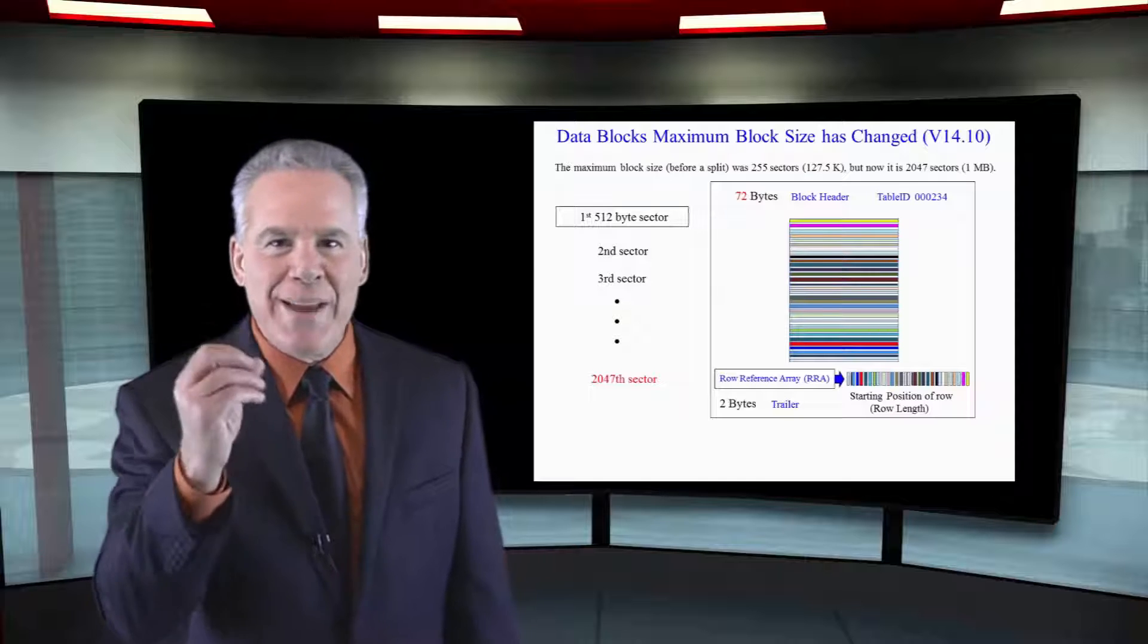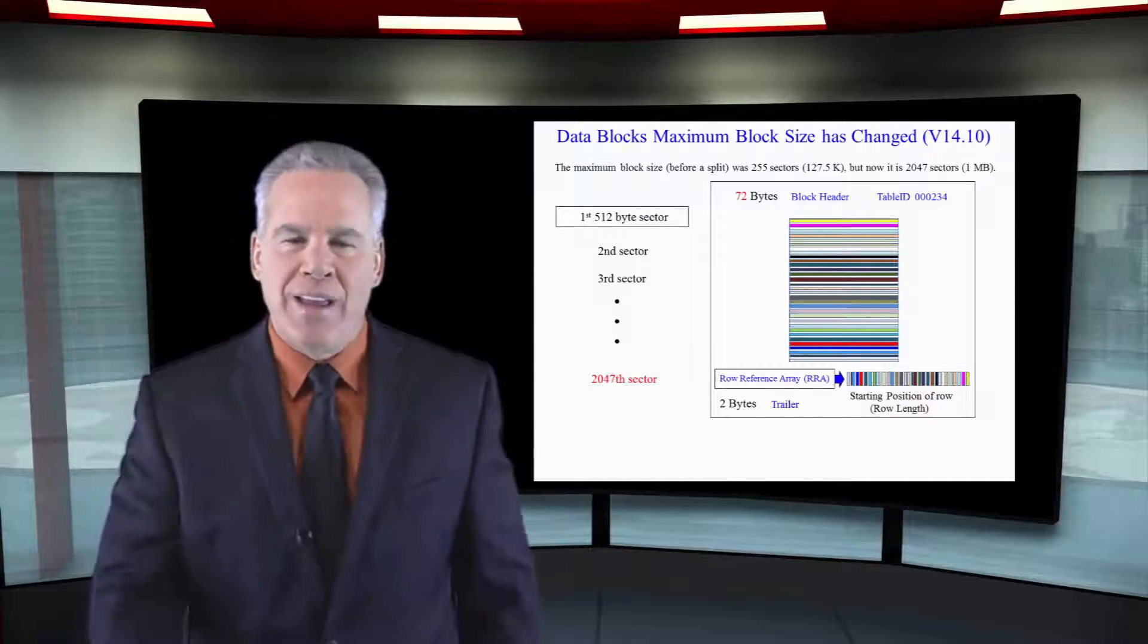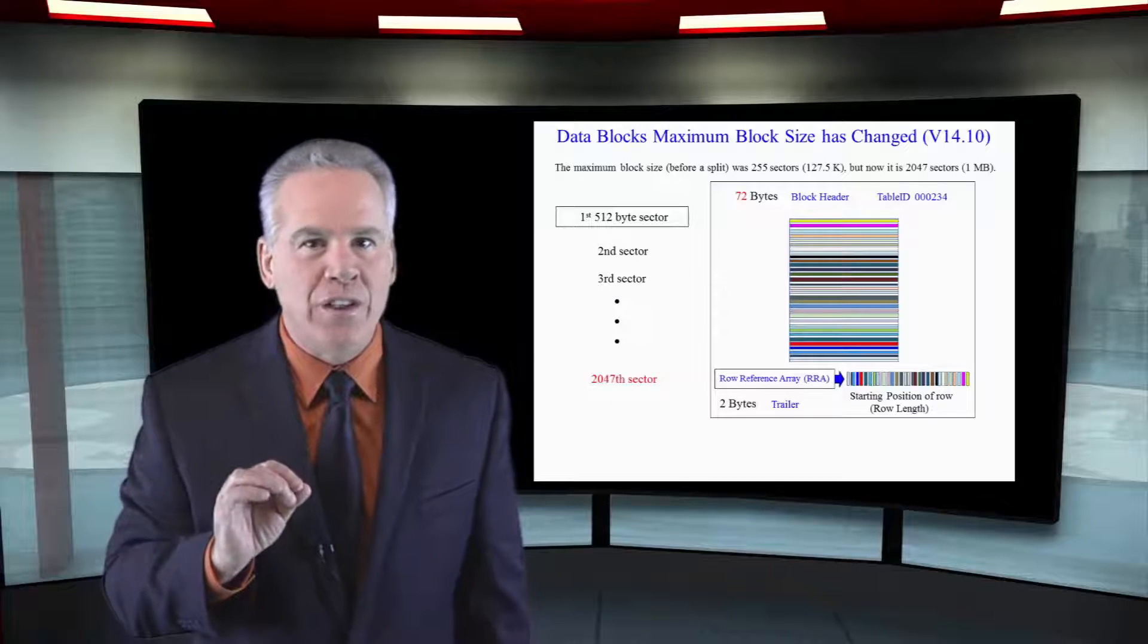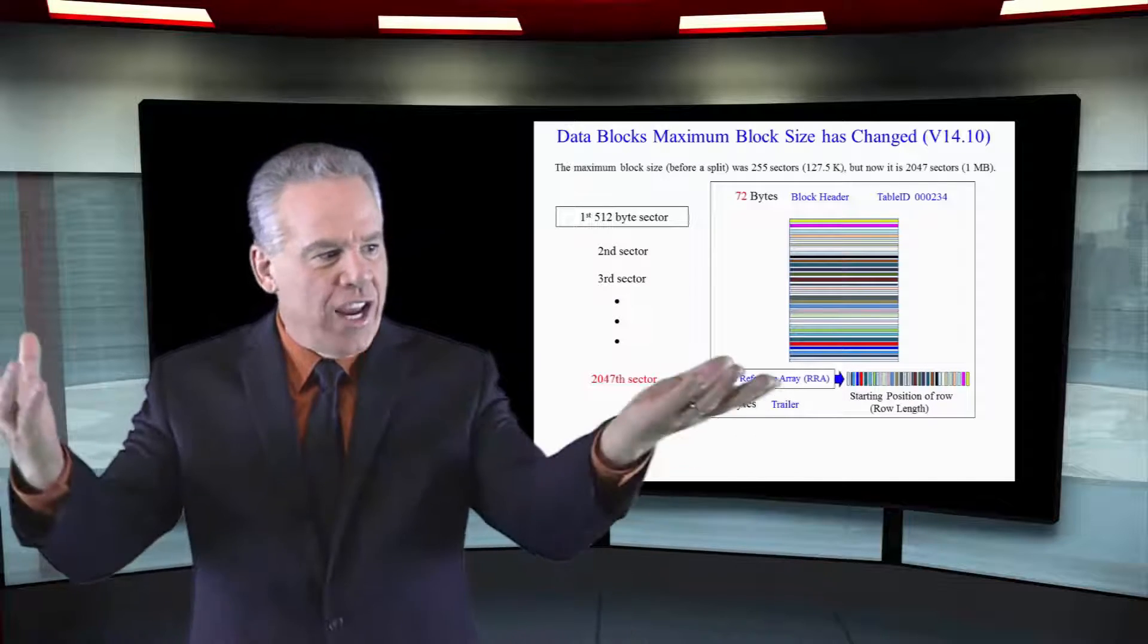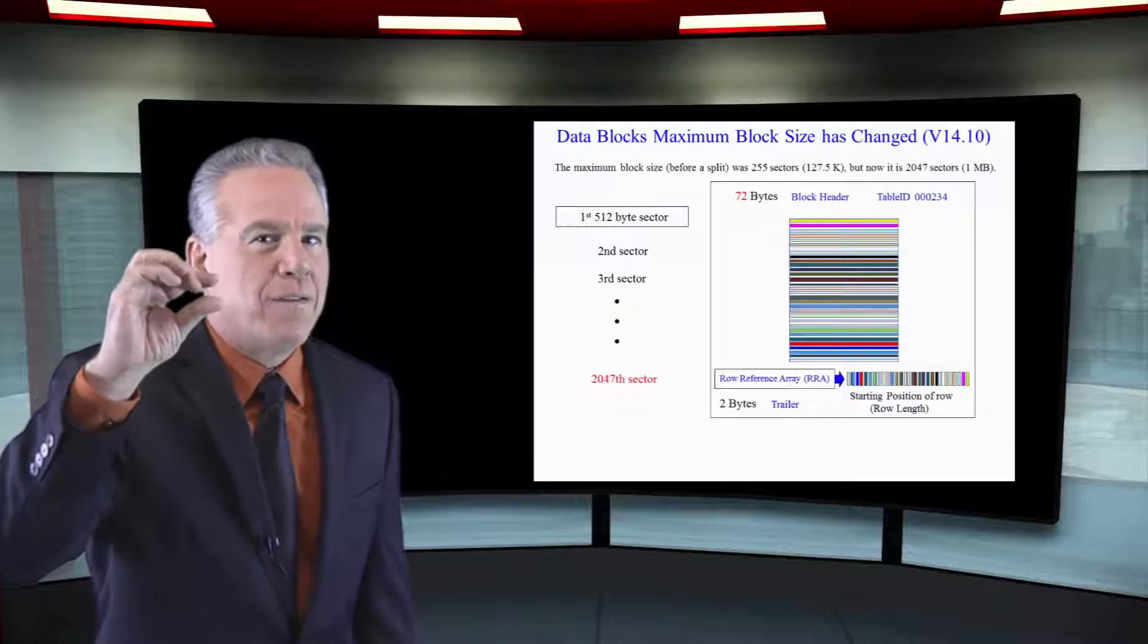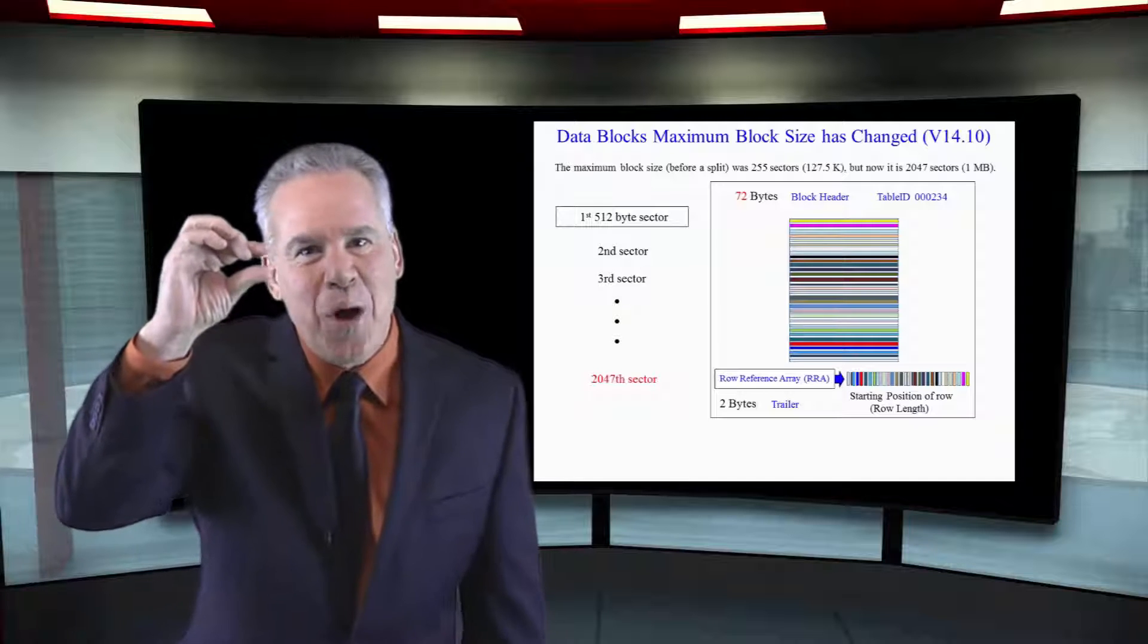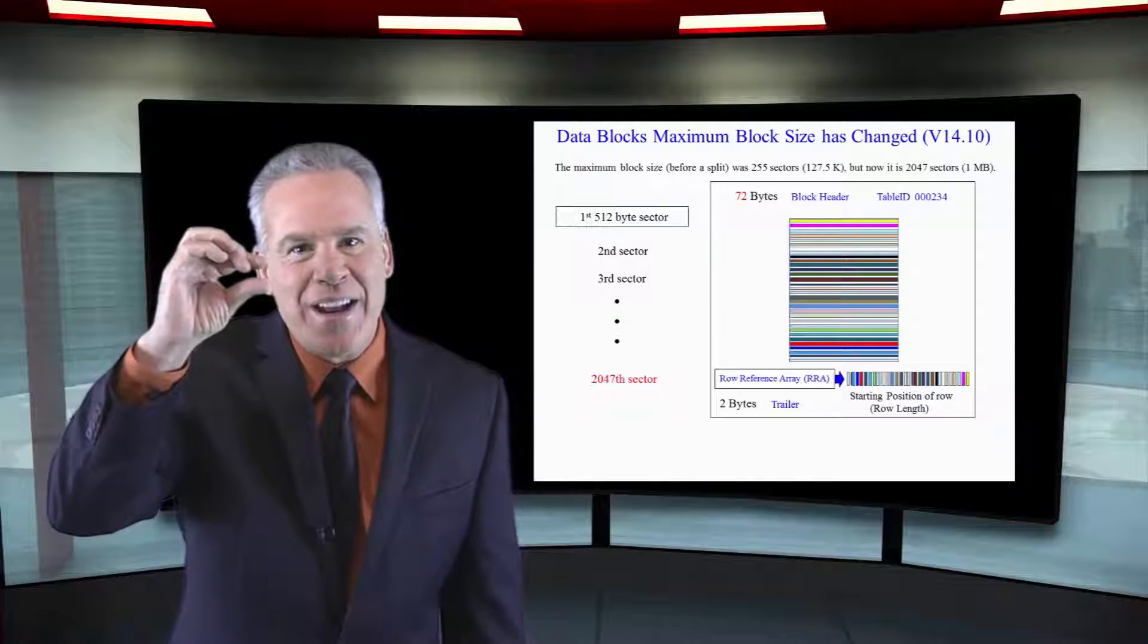Remember, when you create a table, a table header is put on every amp. Then, when they begin to load the data, each amp literally opens at a minimum a 512 byte sector. It's like you have a little wallet. Then, they load that up.